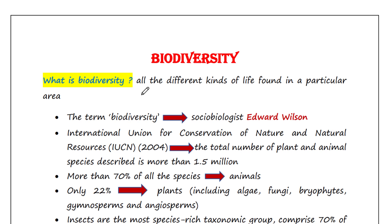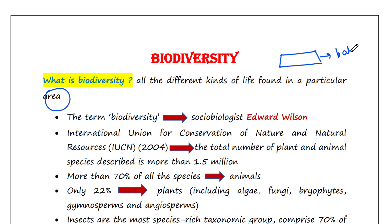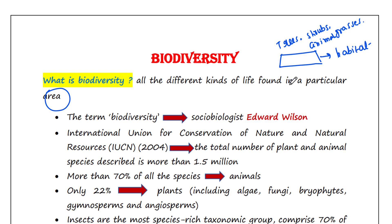Biodiversity is all the different kinds of life one can find in a particular area. Suppose we have a particular habitat, and here we have some trees, we have some shrubs, we have grasses, we have different animals. So all of them are included in the biodiversity.